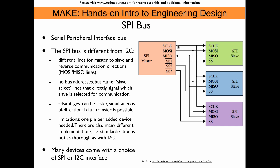Then we have three lines that constitute the data bus. One is the clock line, and then we have the Master Out Slave In and the Master In Slave Out lines for communications in both directions. This is an immediate advantage over the I2C bus, because we can have communications in both directions at the same time — which would not be possible with I2C.